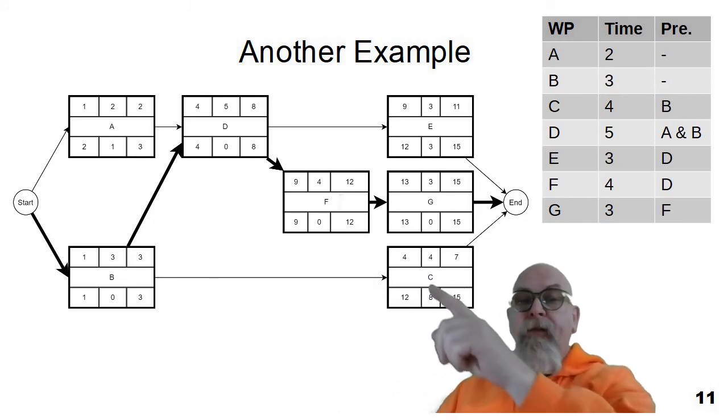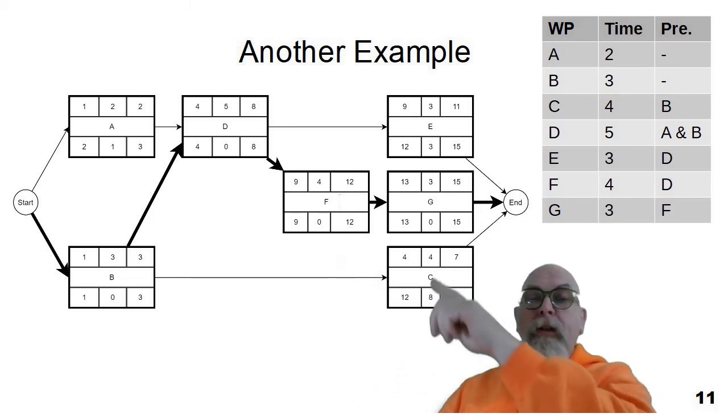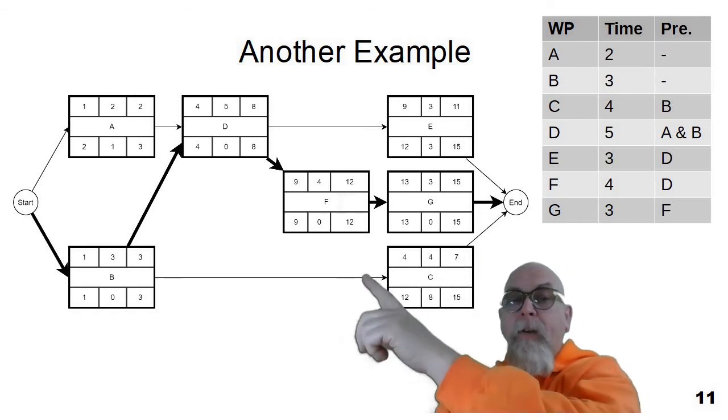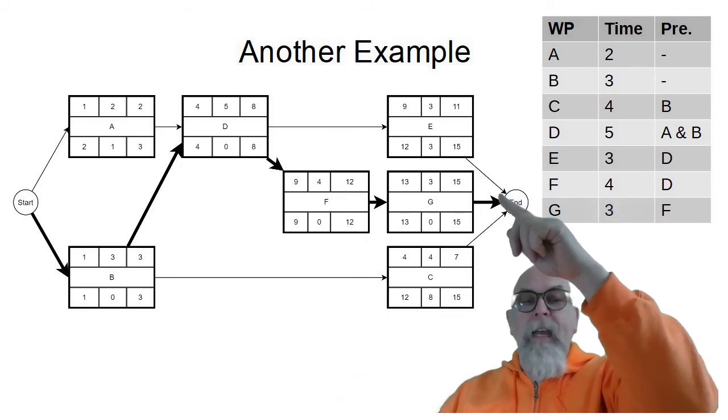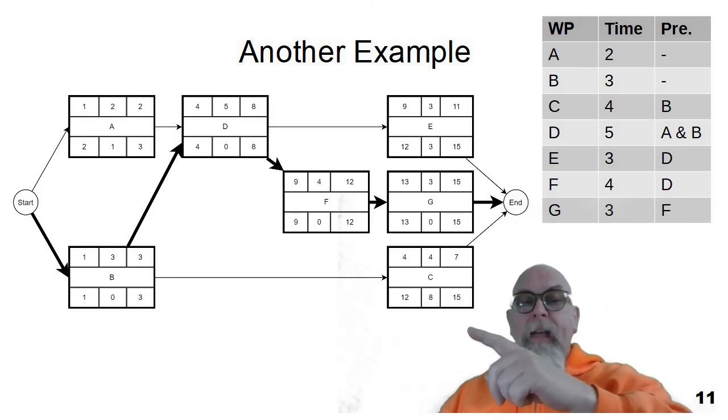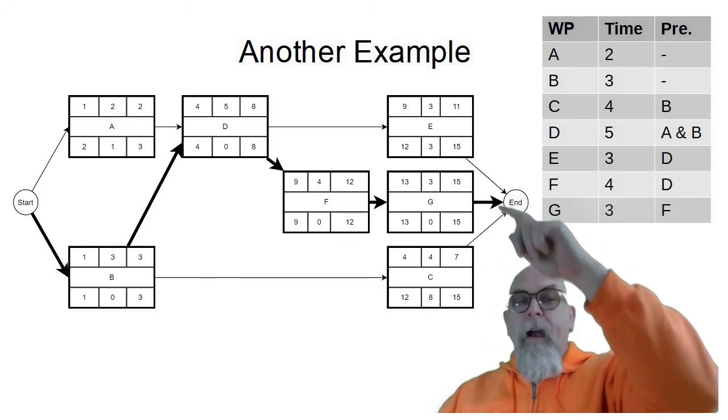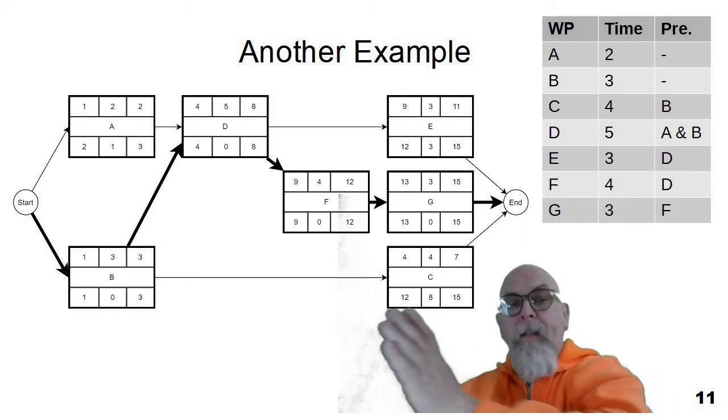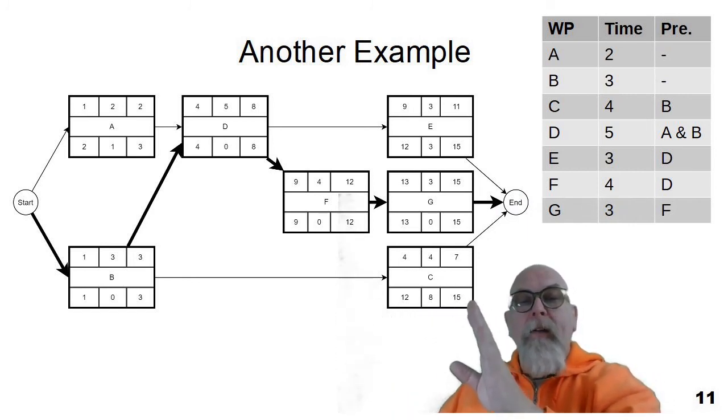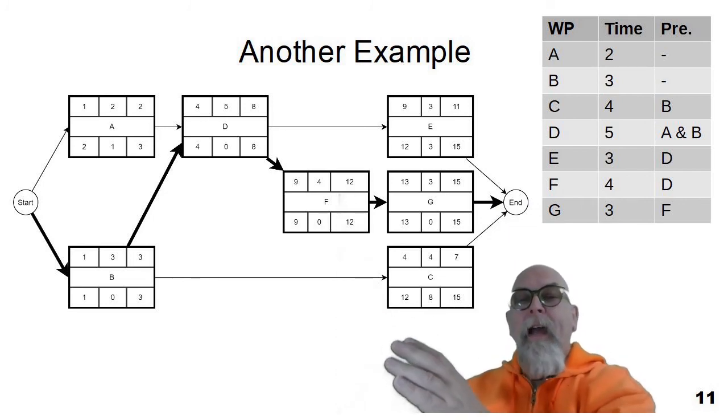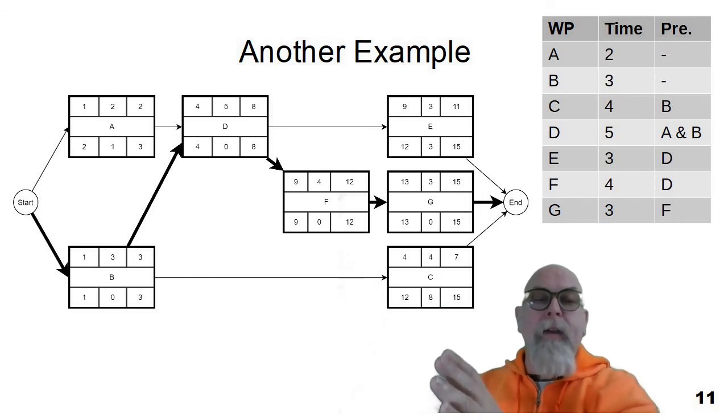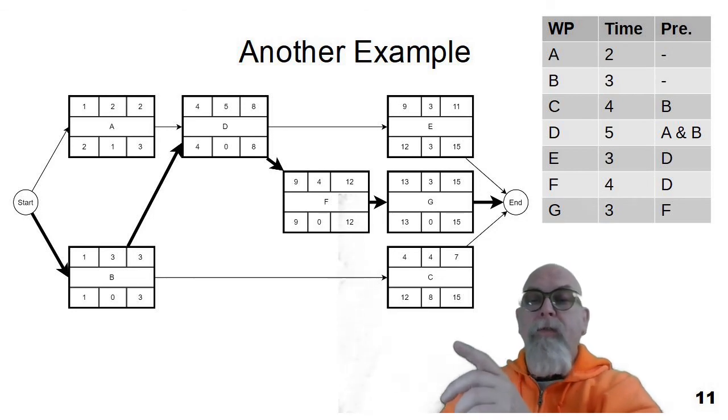We go through and assign ones to A and B because they're the beginning. We then calculated the early finishes through the network diagram, early starts through the network diagram. We then back calculated the late finishes. I then came here and said, well, fifteen is the latest early finish. So I made that the late start here, here, and there. And then I calculated the late finishes, calculated all the late starts, and calculated the slacks. And we can see that the critical path for this network is B, D, F, G.